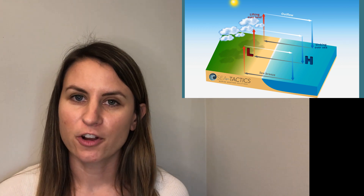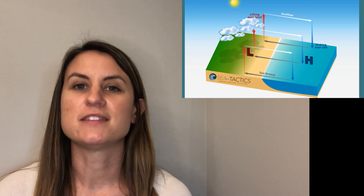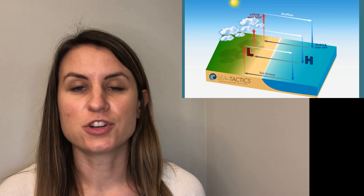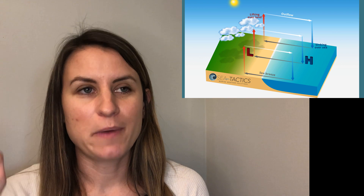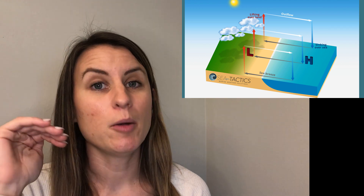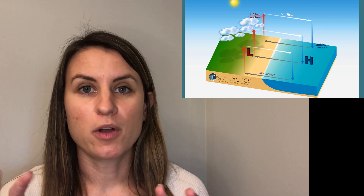That means at the surface we're going to have a sea breeze that starts to develop from the high pressure over the water towards the low pressure over the land. Once you have that, you have basically three sides of a circulation — and naturally that offshore component up at the upper levels, or an outflow component, is going to develop.